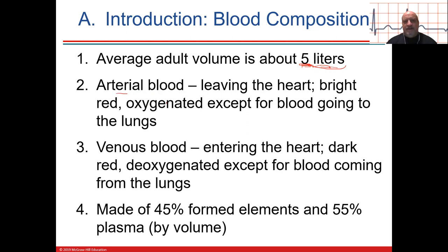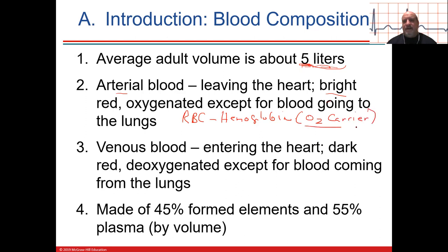Arterial blood leaves the heart. It glows red because it has a great protein inside the red blood cells — hemoglobin. Red blood cells have hemoglobin, and hemoglobin is what carries the oxygen. The red blood cell has no nucleus, so all it is is a life raft for oxygen. Four oxygen molecules bind to one hemoglobin.